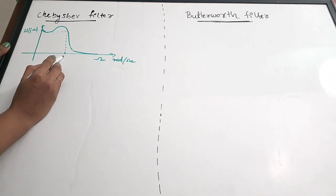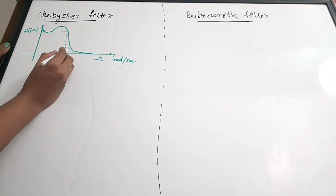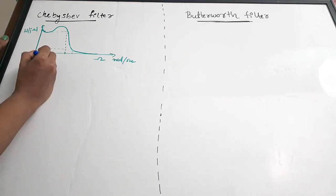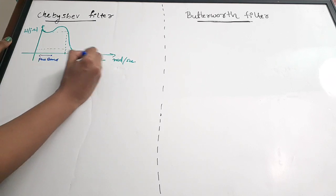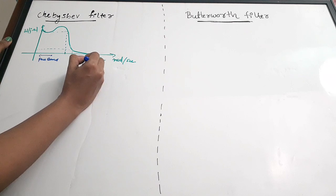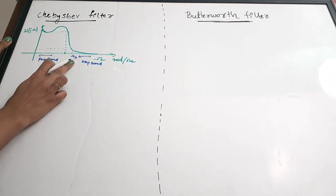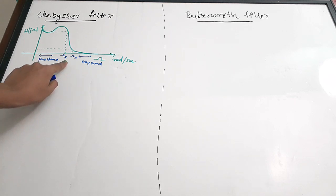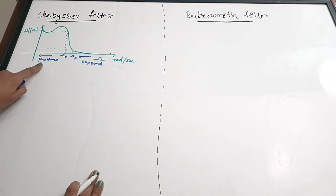This is the passband edge frequency, and from here the stopband starts. So this region is the passband and this is the stopband. Ωs is the stopband edge frequency and Ωp is the passband edge frequency. This is the magnitude response for a Chebyshev filter.